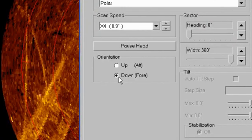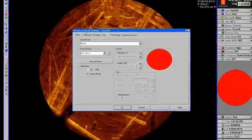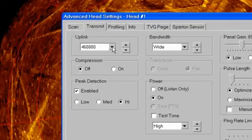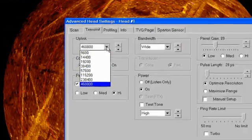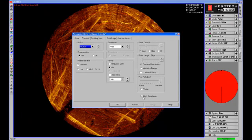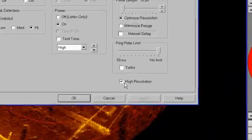Make sure down is selected in the sonar orientation. Ensure your uplink baud rate is set to 460. If using a high resolution sonar head, ensure the high resolution is enabled.